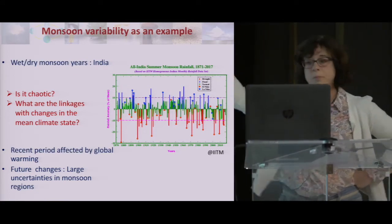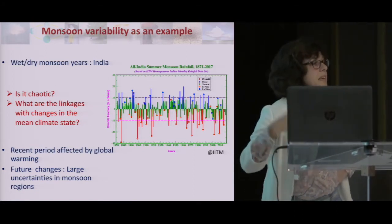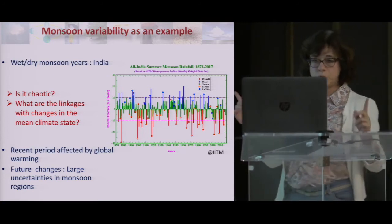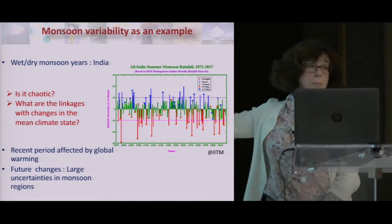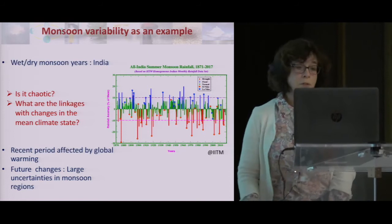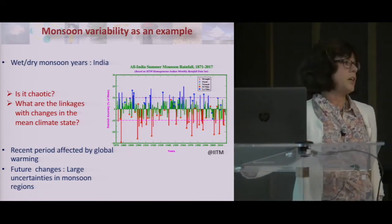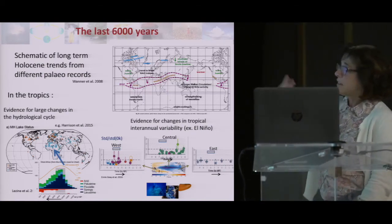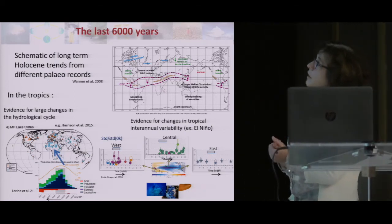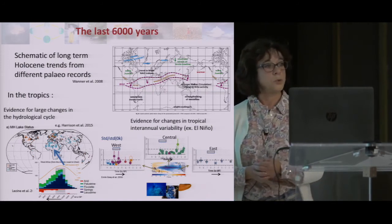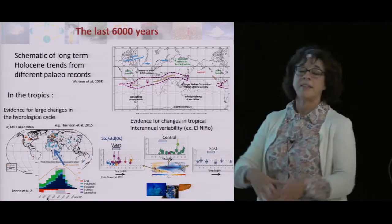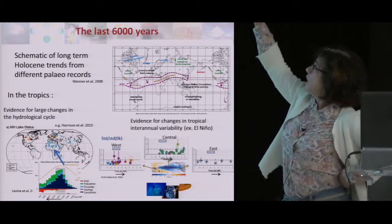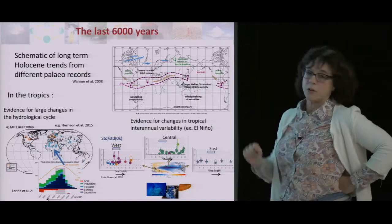Is it chaotic? We don't know how it fluctuates. Is there a change in the mean state in the future? The present-day observation record is too short, and we know we are already affected by global warming, which might affect variability. For the future, there is a lot of uncertainty in what models project for this region. So what can we get out of the last 6,000 years? There are lots of observations. This is a period where we start with a more enhanced monsoon compared to present day, with a southward shift of the ITCZ in summer.